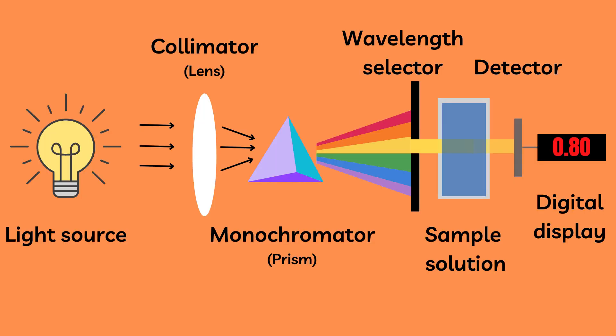So next, let us take a look at the different components that make up the device. Here we first find a light source, then a lens called the collimator which focuses the light into a prism or grating known as the monochromator. This in turn splits the incident beam into different wavelengths, and by using an adjustable slit called a wavelength selector, a suitable wavelength spectrum can be selected.